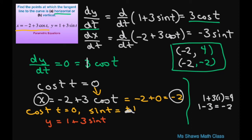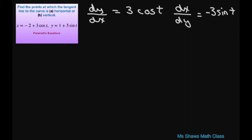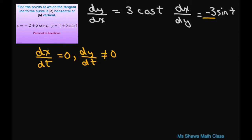Now let's do the vertical tangent. For the vertical tangent, the derivative of x with respect to t equals 0, and the derivative of y with respect to t is not equal to 0. So negative 3 sine of t equals 0, and dividing both sides by negative 3 gives sine of t equals 0.